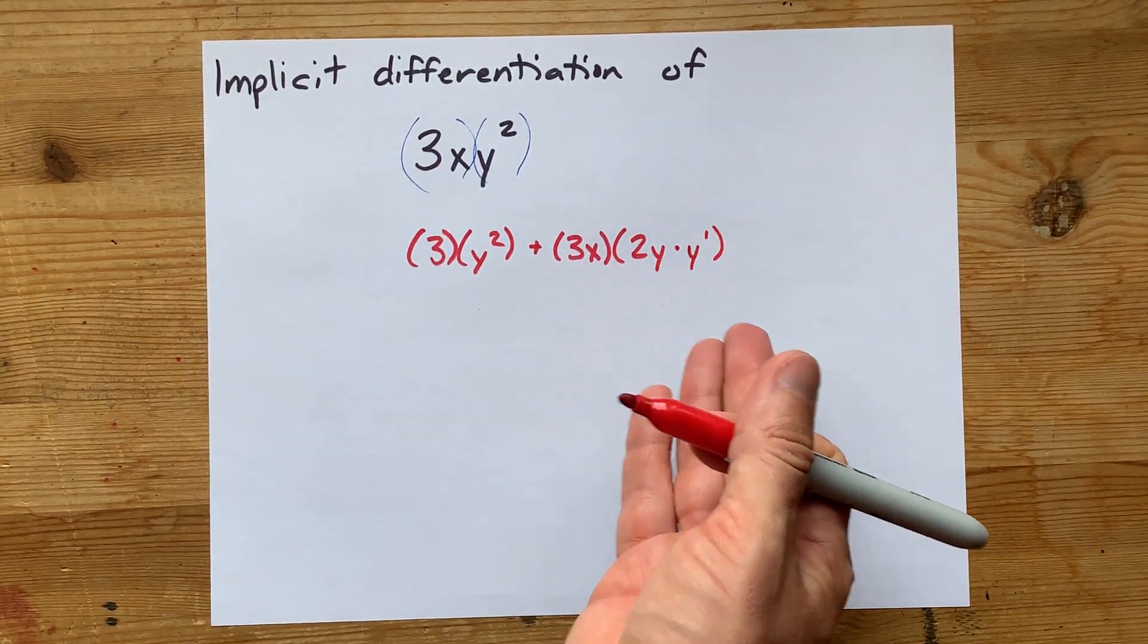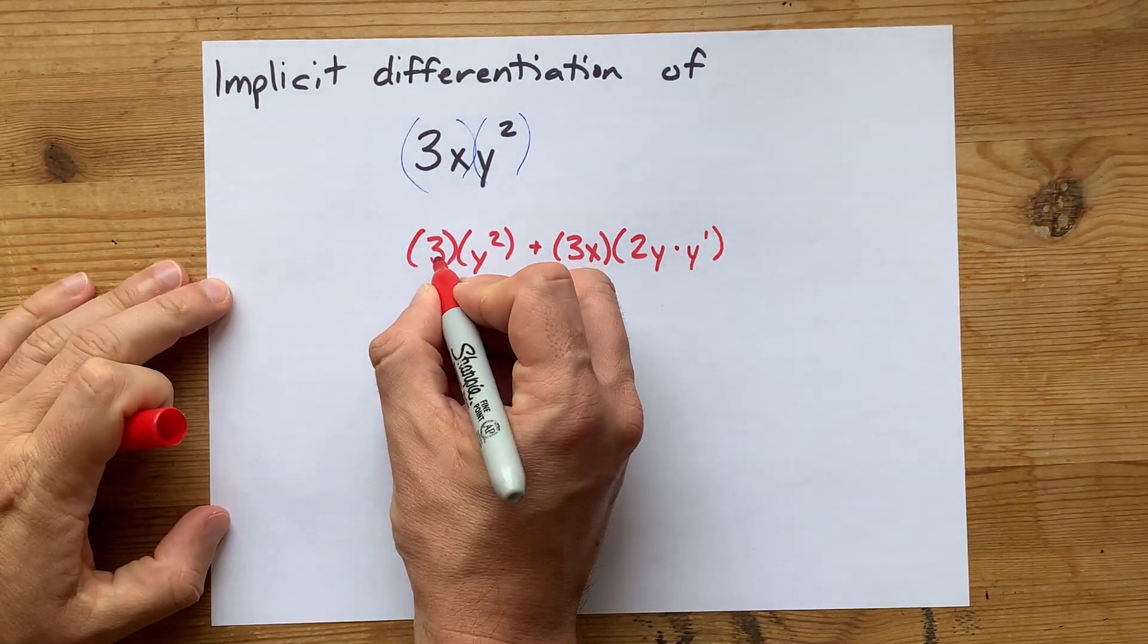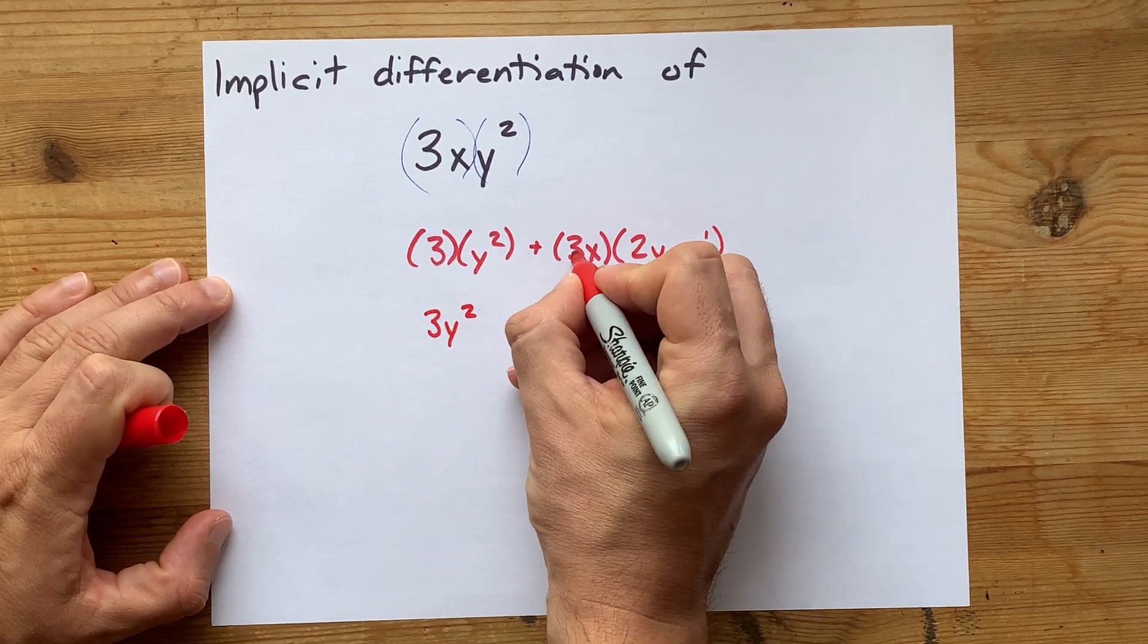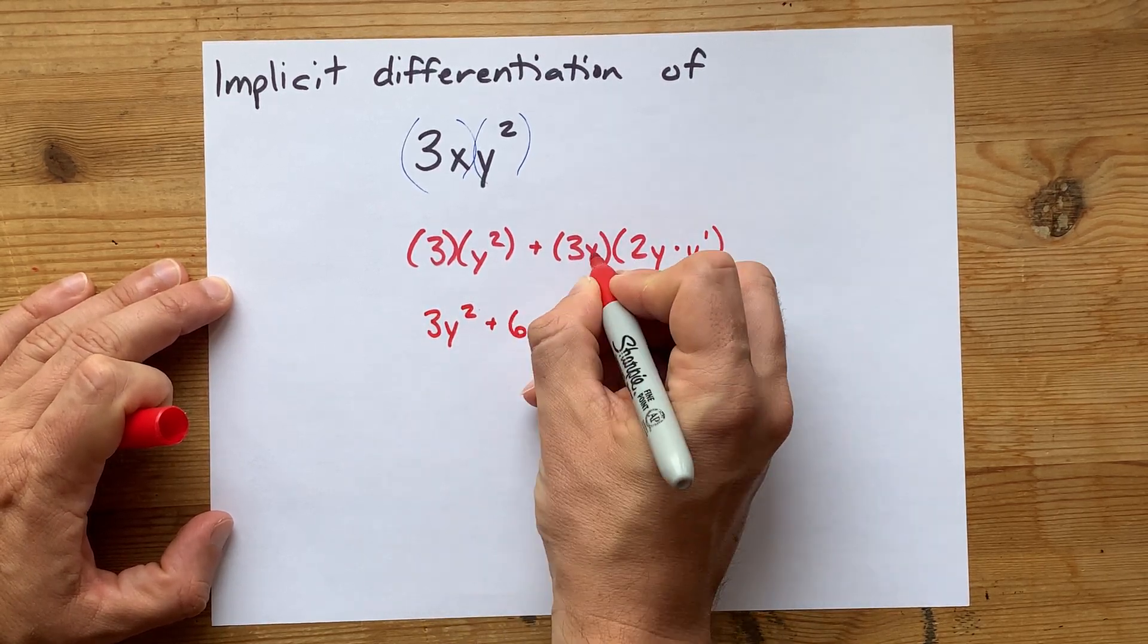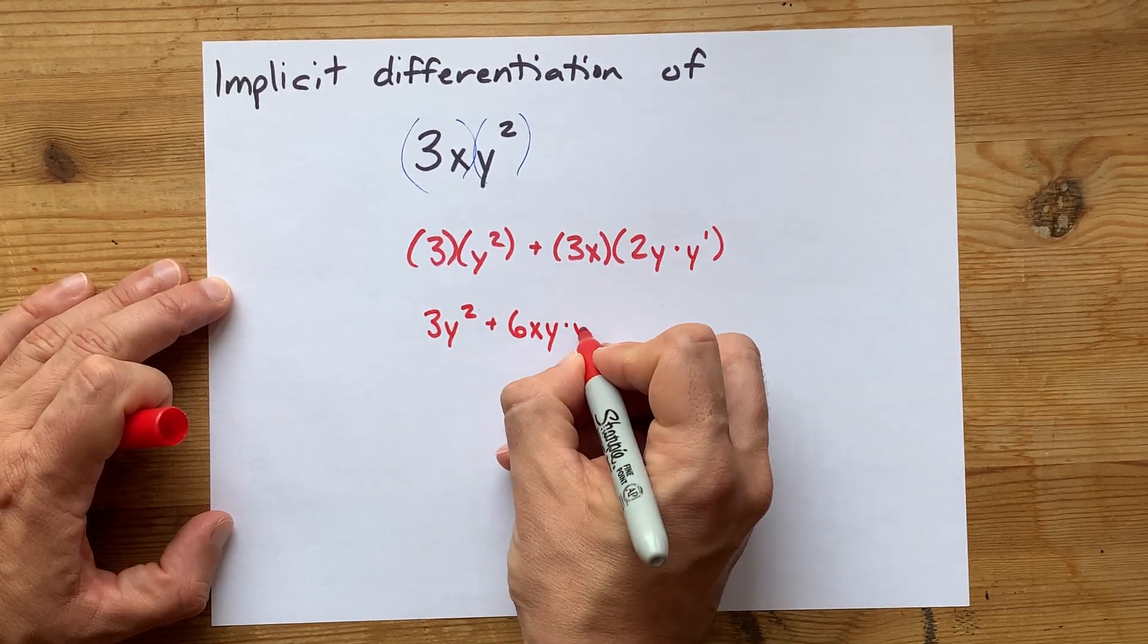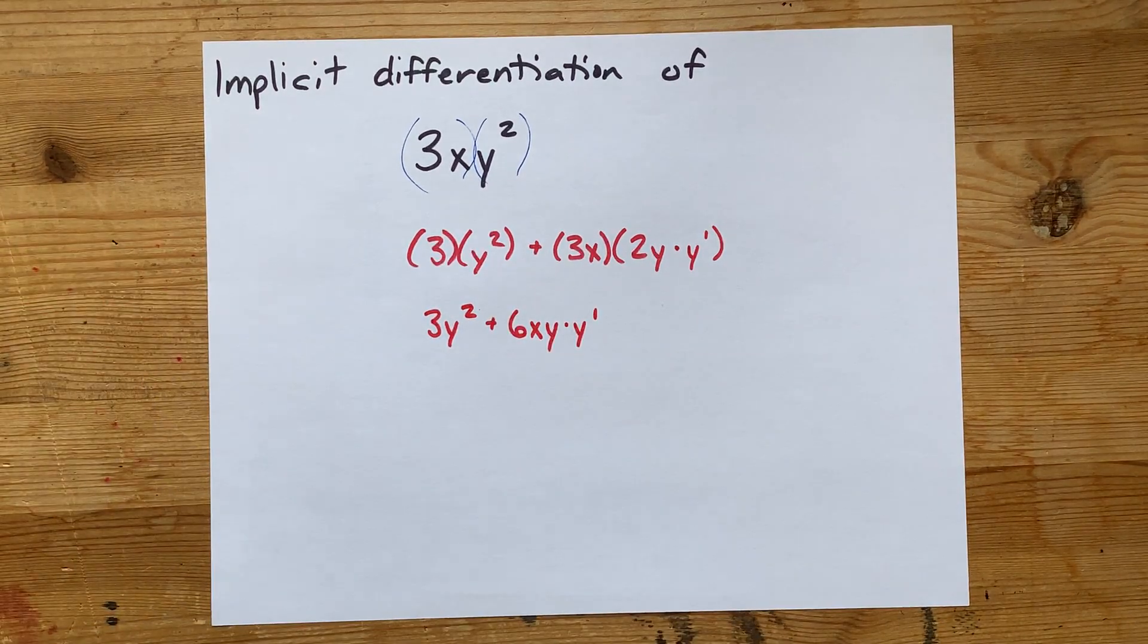Well, that's pretty much it. That's the derivative as is. We might be able to clean this up a little. 3 times y squared is 3y squared. 3 times 2 here is 6. There's an x and a y and a y prime. So that's probably as simple as I can get it right now.